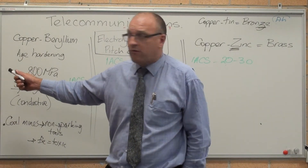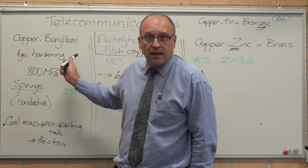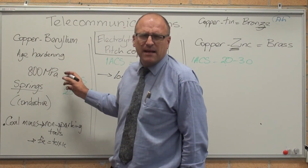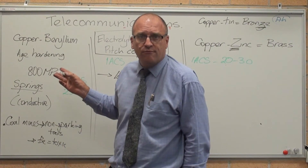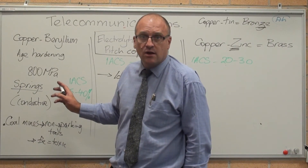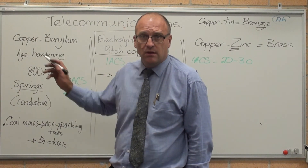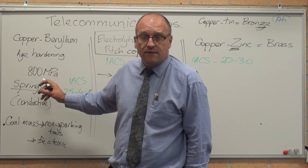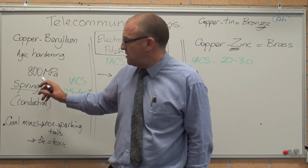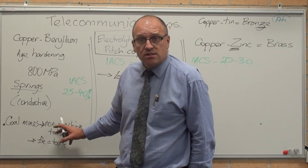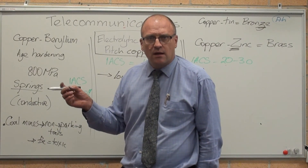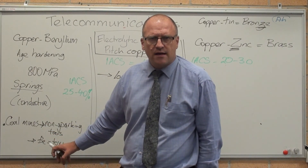Copper-beryllium alloys are age-hardening alloys — we spoke about the precipitation hardening mechanism previously. They have 800 megapascals yield strength, incredibly high, three times that of mild steel. They are used in springs and in the manufacture of springs used in electrical contacts. If you need electricity to flow through something that still needs to be strong, copper-beryllium is the choice. Copper-beryllium is also used in coal mines because it's non-sparking. The last thing you want in coal dust is an electrical spark, so it is used specifically for its safety considerations in mines.